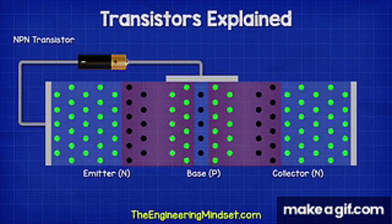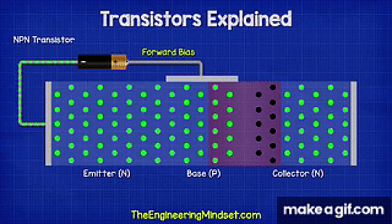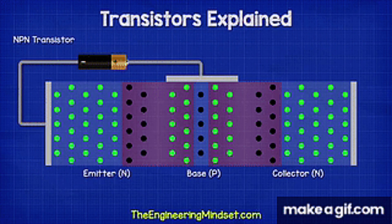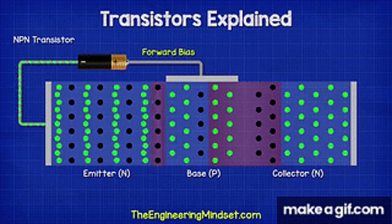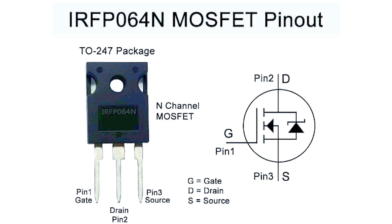Current flows from drain to source when the gate is positively charged relative to the source. The positive voltage at the gate creates an electric field that attracts electrons to form a conductive channel.